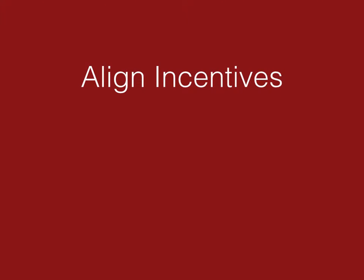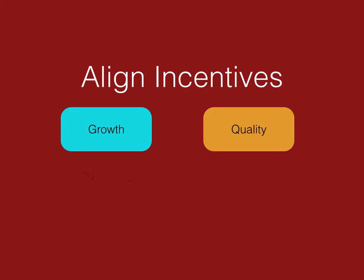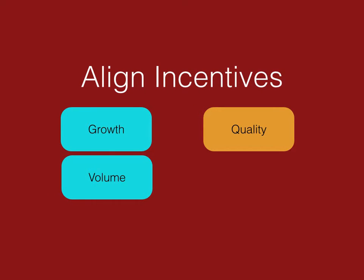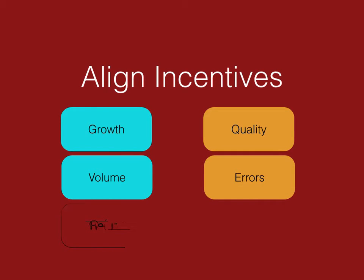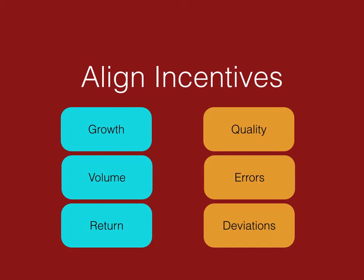The big solution to all these problems is to align the incentives of employees. But in business we often see conflicting criteria: some are focused on growth while others focus on quality; one team focuses on volume while another focuses on minimizing errors; one focuses on maximizing return while another focuses on minimizing deviations. If all the growth/volume/return incentives sit on one side and all the quality/error/deviation incentives on the other, there will be conflict within the business. The big trick is figuring out how to align those incentives.